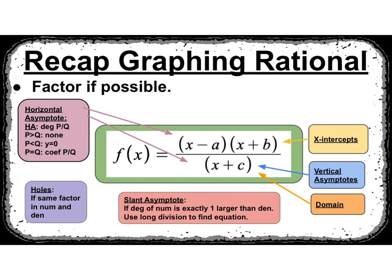So you need to know where to find all of the pieces. The x-intercepts come from the numerator. The vertical asymptotes and the domain come from the denominator — and you really do need to see the graph. The horizontal asymptote rules compare p and q degrees. For holes, if you have the same factor in both numerator and denominator, draw it as an open circle on your graph. And the slant asymptote also compares degrees — if the numerator's degree is exactly one larger, use long division to find that equation.